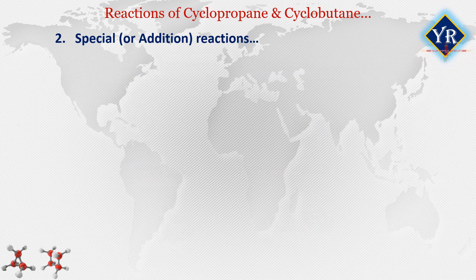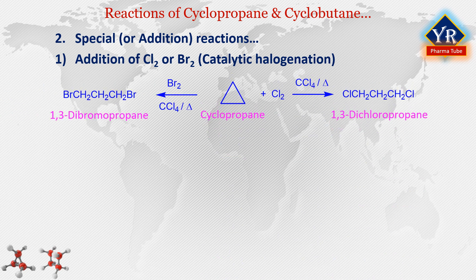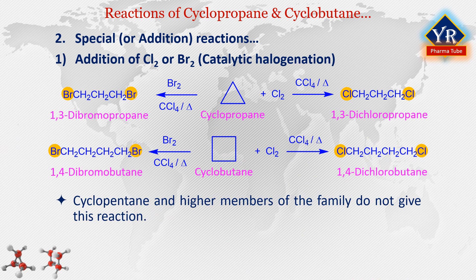Addition of chlorine or bromine, also known as catalytic halogenation: Cyclopropane reacts with chlorine or bromine at room temperature and in the absence of diffused sunlight to produce 1,3-dichloropropane and 1,3-dibromopropane respectively. One of the carbon-carbon bonds of cyclopropane is broken and the two halogen atoms appear at the ends of the propane chain. Cyclobutane and higher members of the family do not give this reaction.